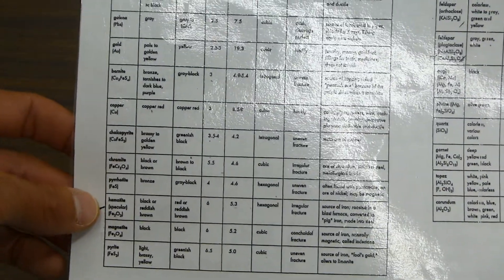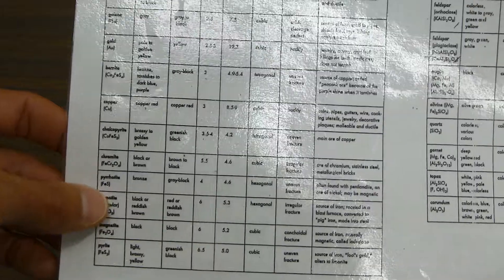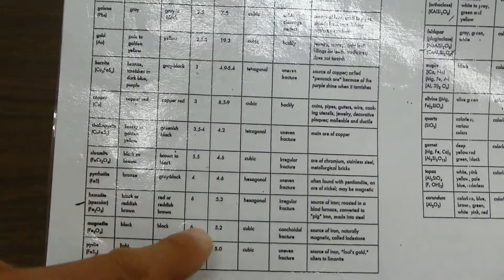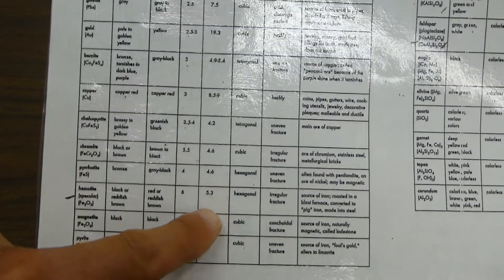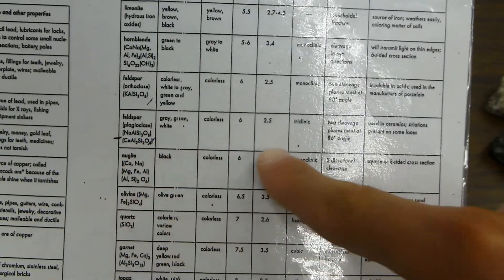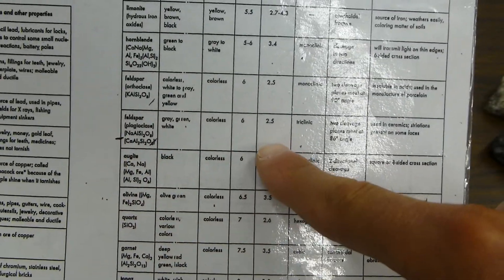You can see here is hematite with its specific gravity right there of 5.3. Over here is feldspar with its specific gravity of 2.5.